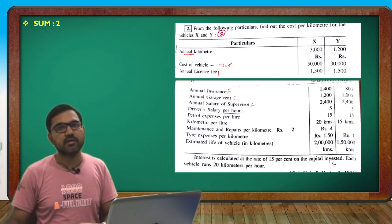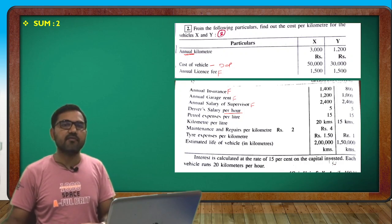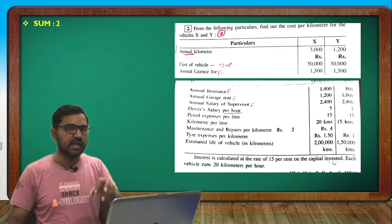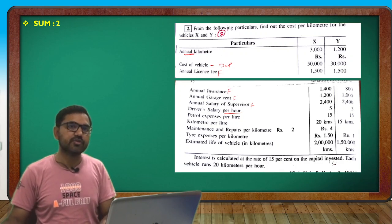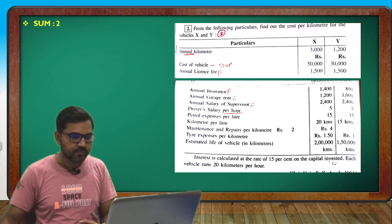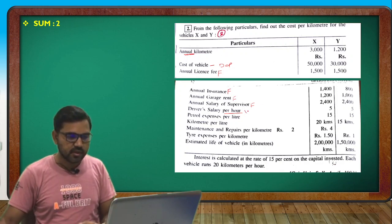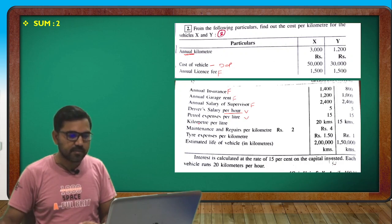The driver salary is given per hour — however many hours the vehicle runs, we give salary for those hours. So this is one type of variable expense. Petrol expense is variable. The km per liter figure is given for each vehicle.